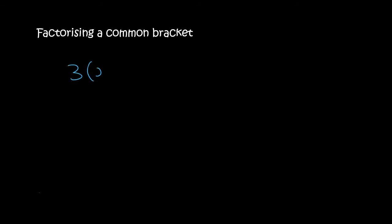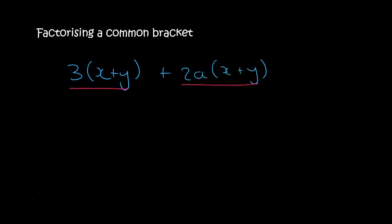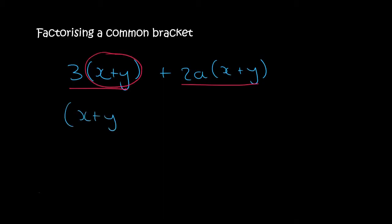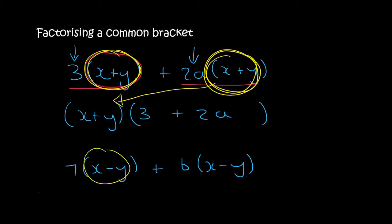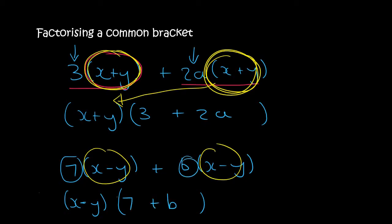The new type of factorizing is going to look something like this. We have two terms and the common thing is this entire bracket. So we take out the entire bracket — in the first term you're still going to have a 3 left, and in the second term you're still going to have a plus 2a, because the common thing was the x plus y. You simply took the x plus y to the front. Here the common thing is x minus y, so that goes to the front in a bracket. Then in your first term you're still left with a 7, and in your second term you're still left with a b. It's as easy as that.